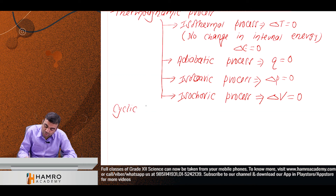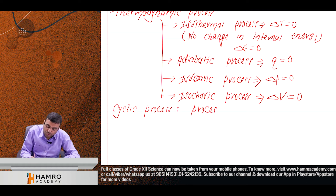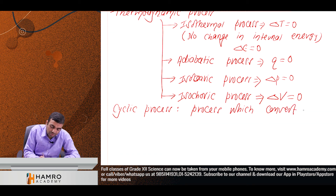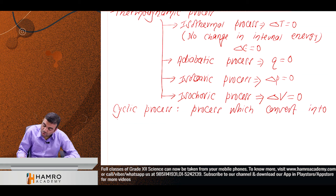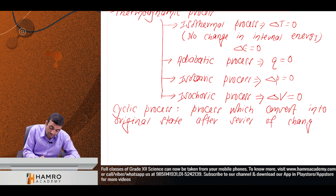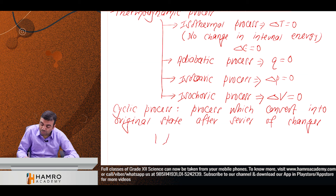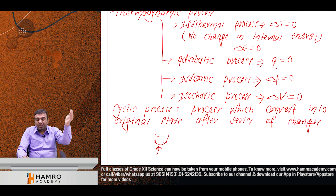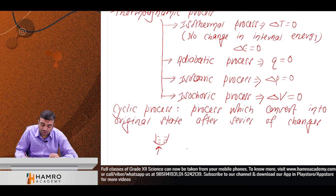Cyclic process: the system converts back to its original state after a series of changes. For example, if water starts at 25 degrees centigrade and after various changes returns to 25 degrees centigrade, that is a cyclic process.